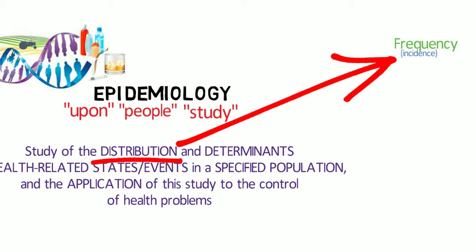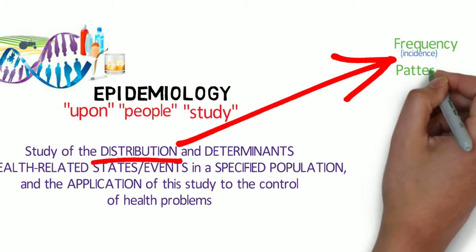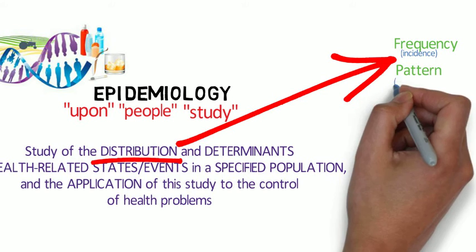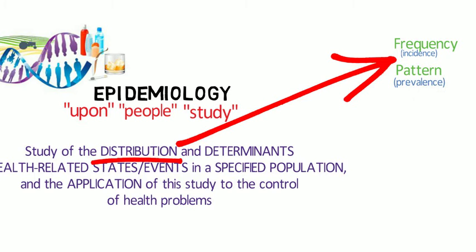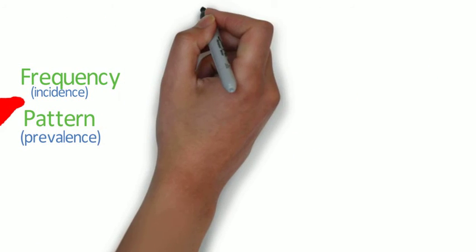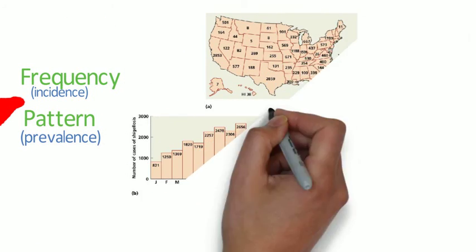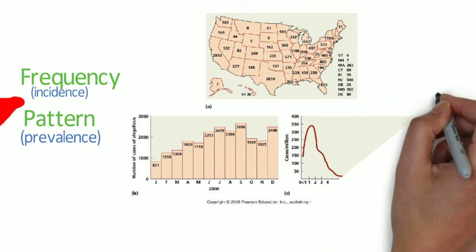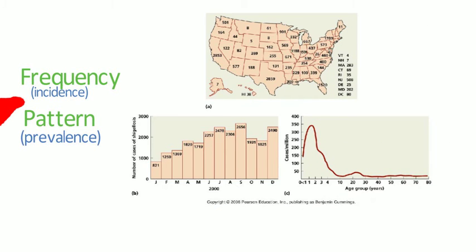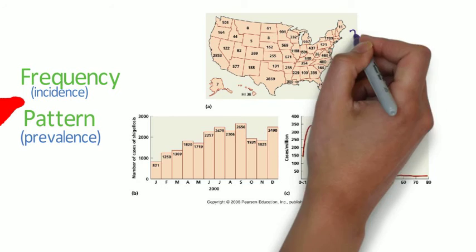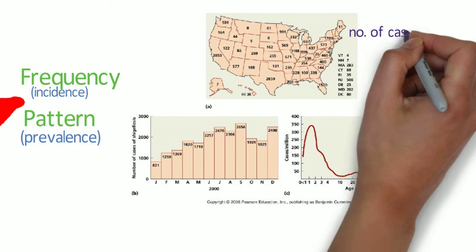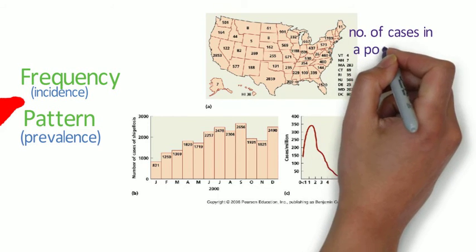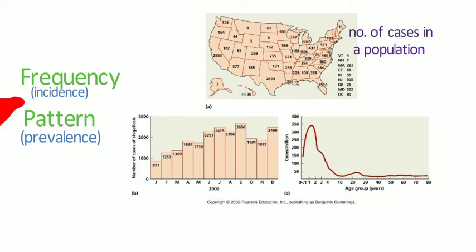Pattern refers to the occurrence of health-related events by time, place, and person. Time patterns may be annual, seasonal, weekly, daily, hourly, weekend versus non-weekend, or any other breakdown of time that may influence disease or injury occurrence. Place patterns include geographic variation, urban and rural differences, and location of work sites or schools.